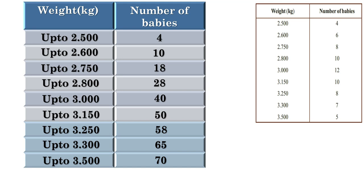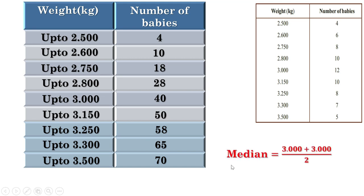Let us find the birth weight of the 35th and 36th babies. Up to 3.15 kilograms there are 40 babies. That means the babies from the 29th to the 40th have the birth weight 3 kilograms. So the 35th and 36th babies also have the birth weight 3 kilograms. Therefore, the median is (3 + 3) / 2, which equals 3. The median birth weight is 3 kilograms.